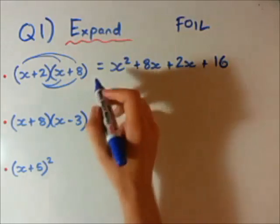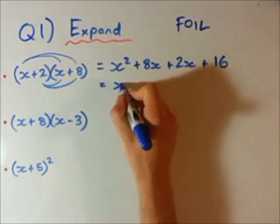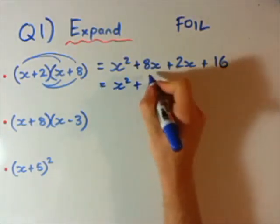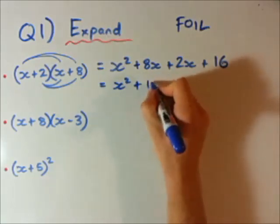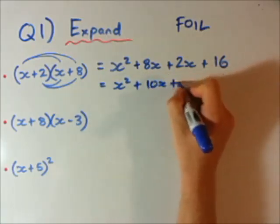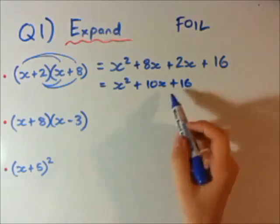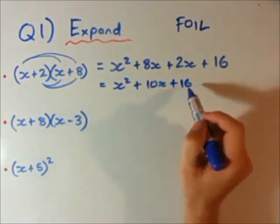Now, we haven't quite finished there yet because we have like terms here, which I'm then going to group and add them together, 8x plus 2x is 10x, plus 16. So there's our expanded answer for these brackets, and this is in quadratic form.